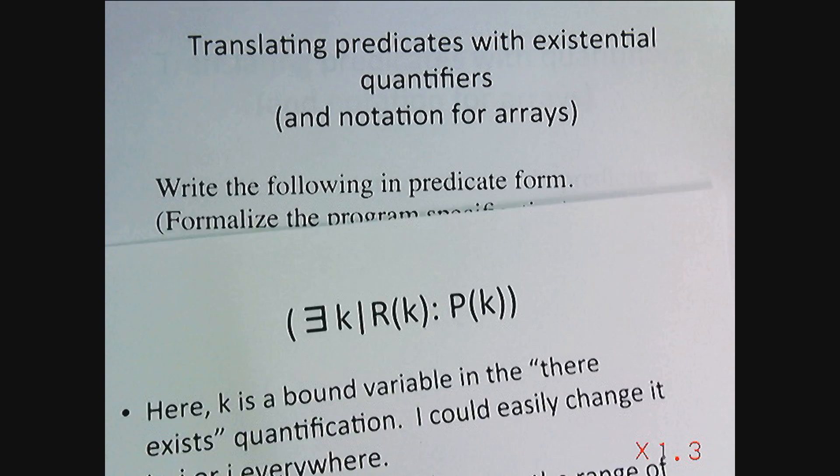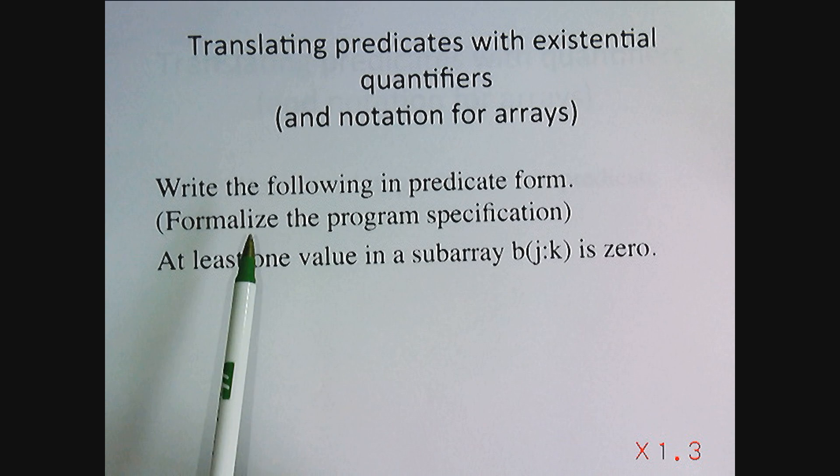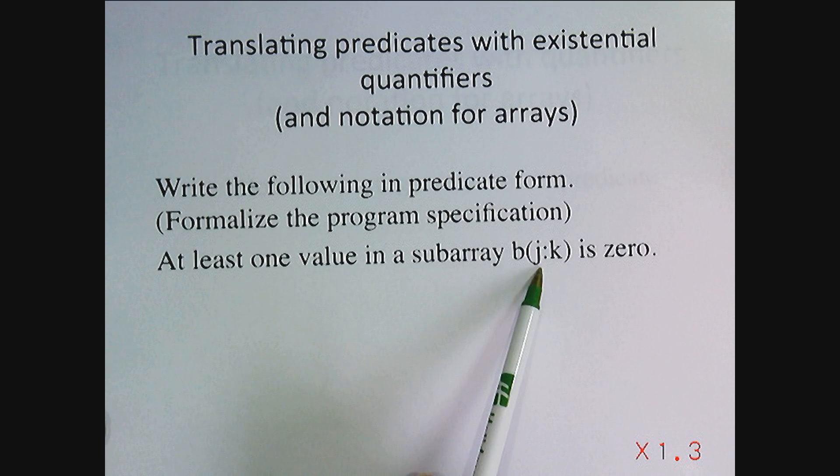Let's look at an example. This time we want to write out at least one value in the subarray b(j) to k is zero in symbolic form.